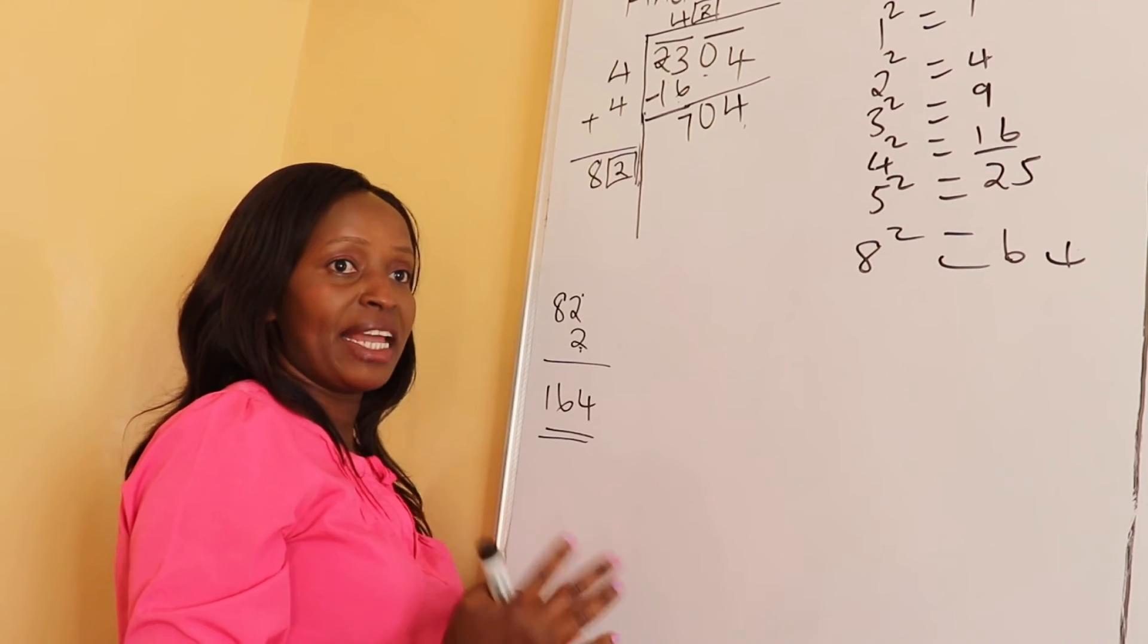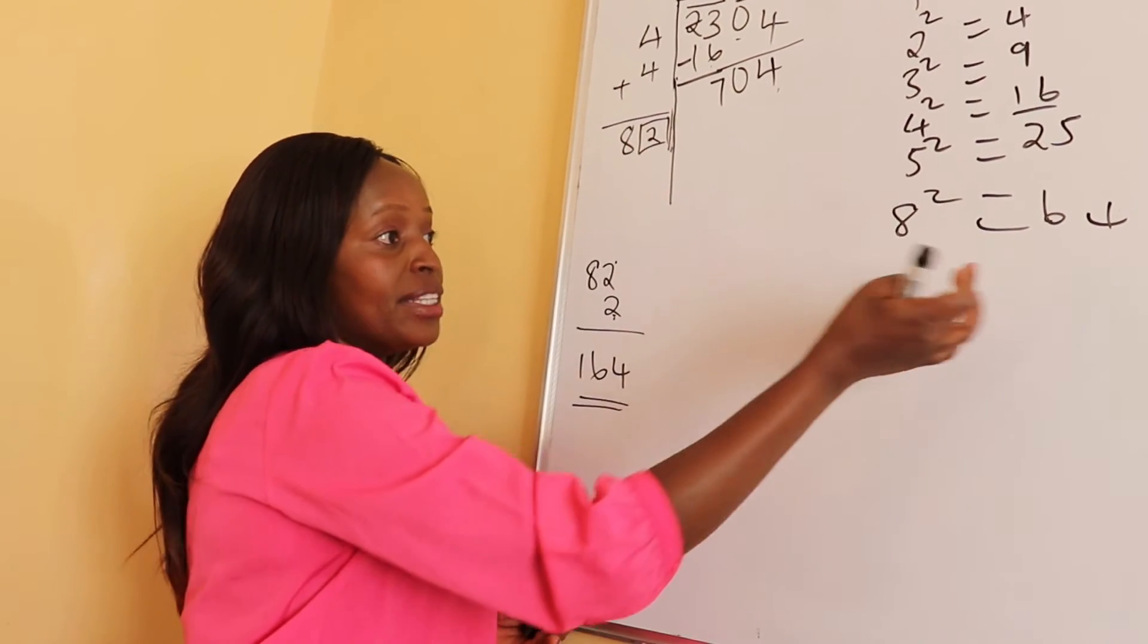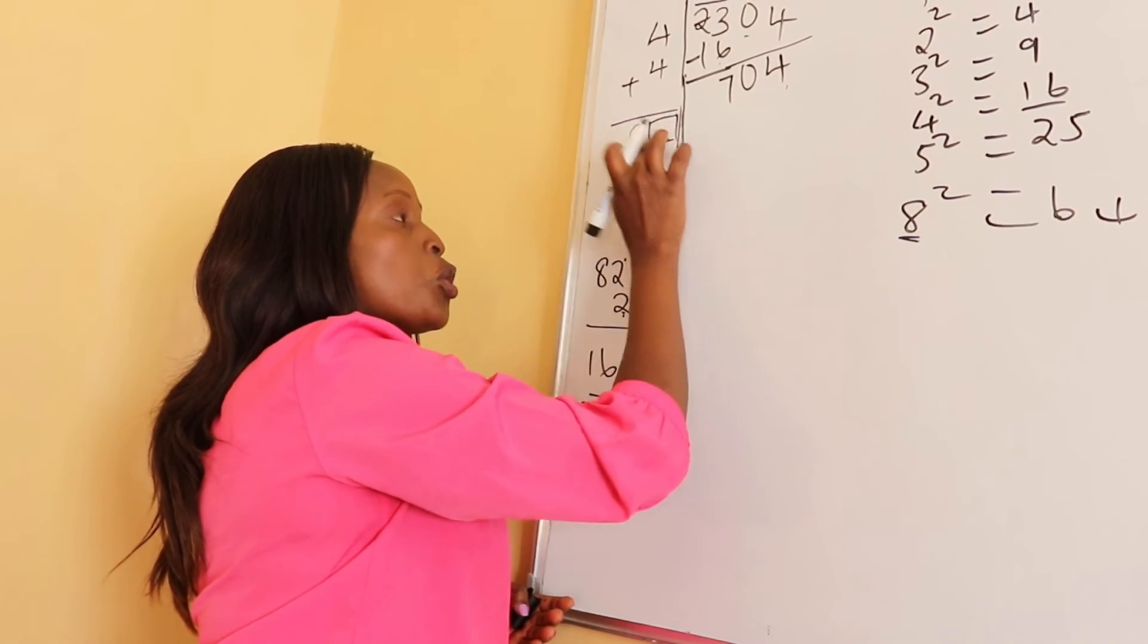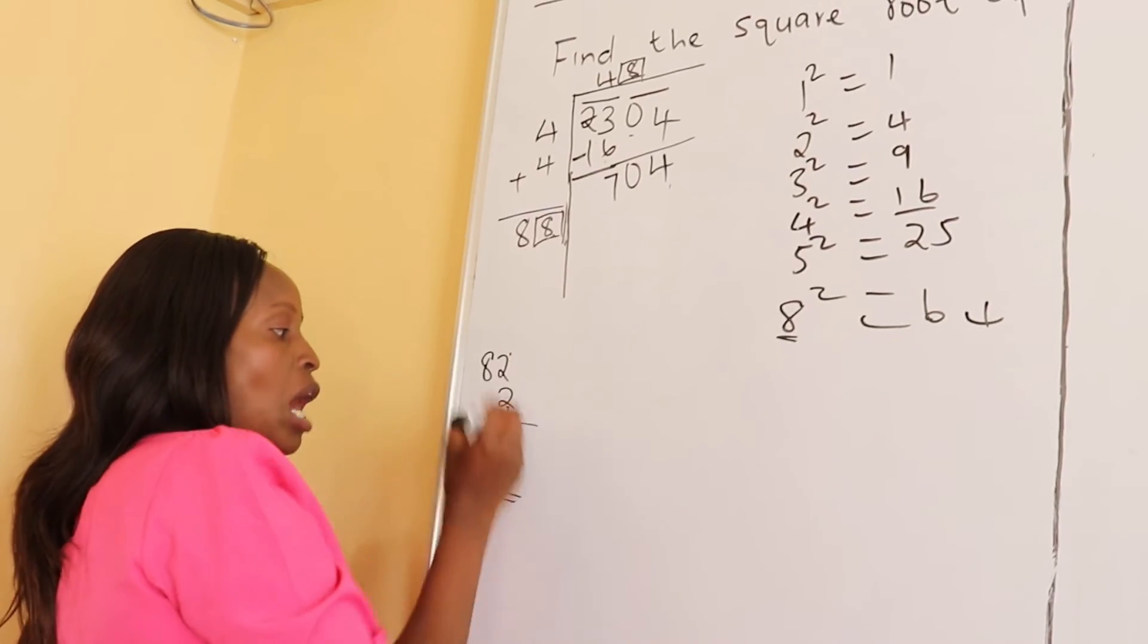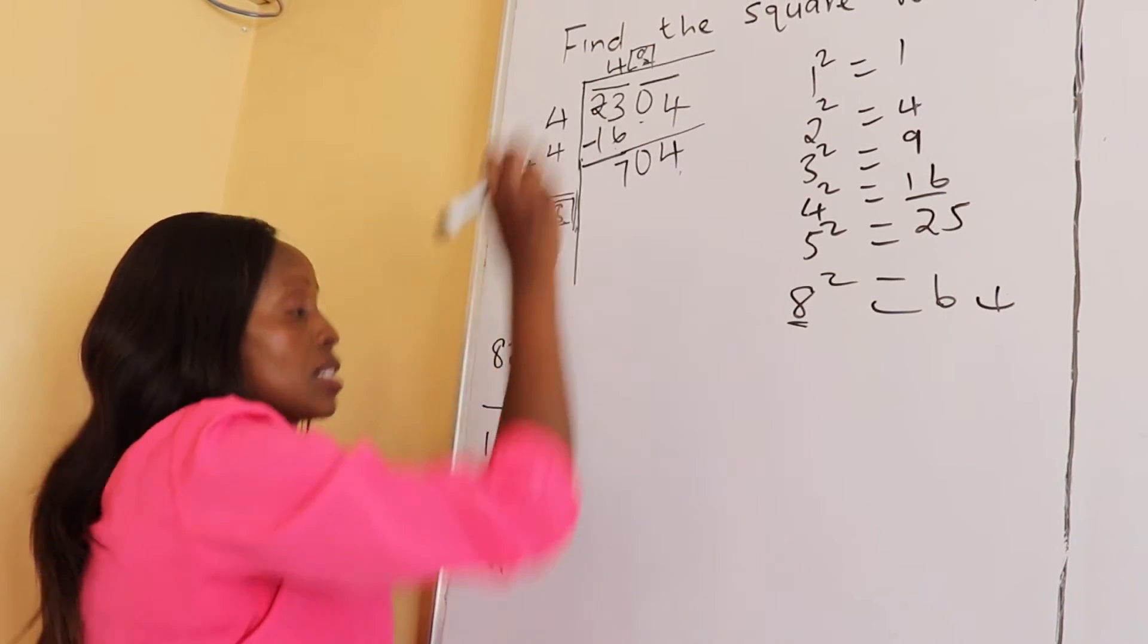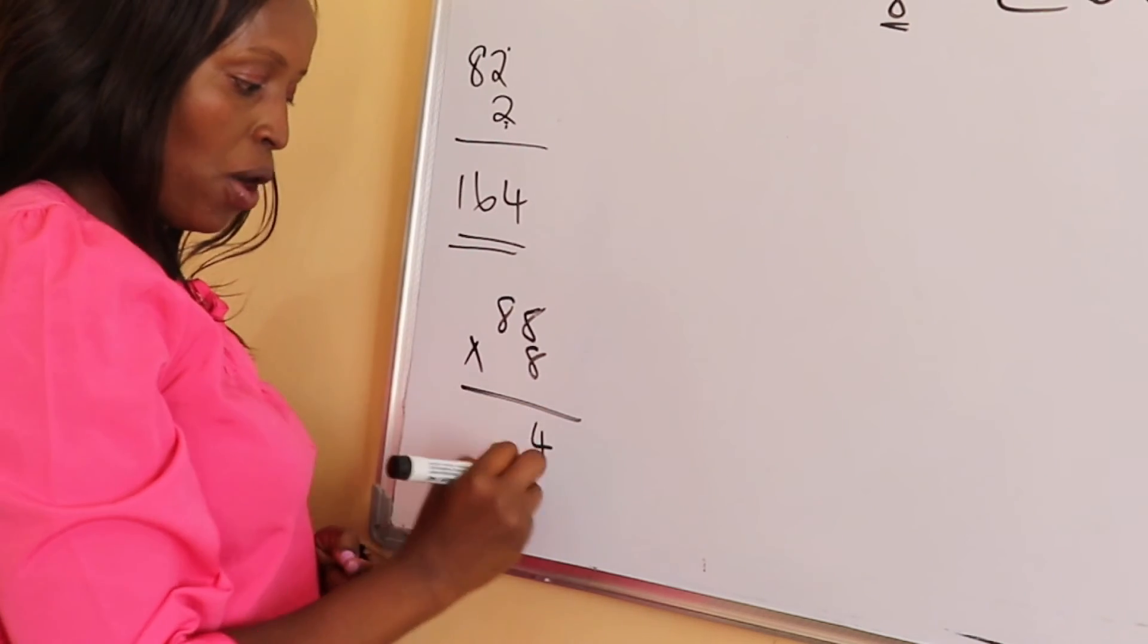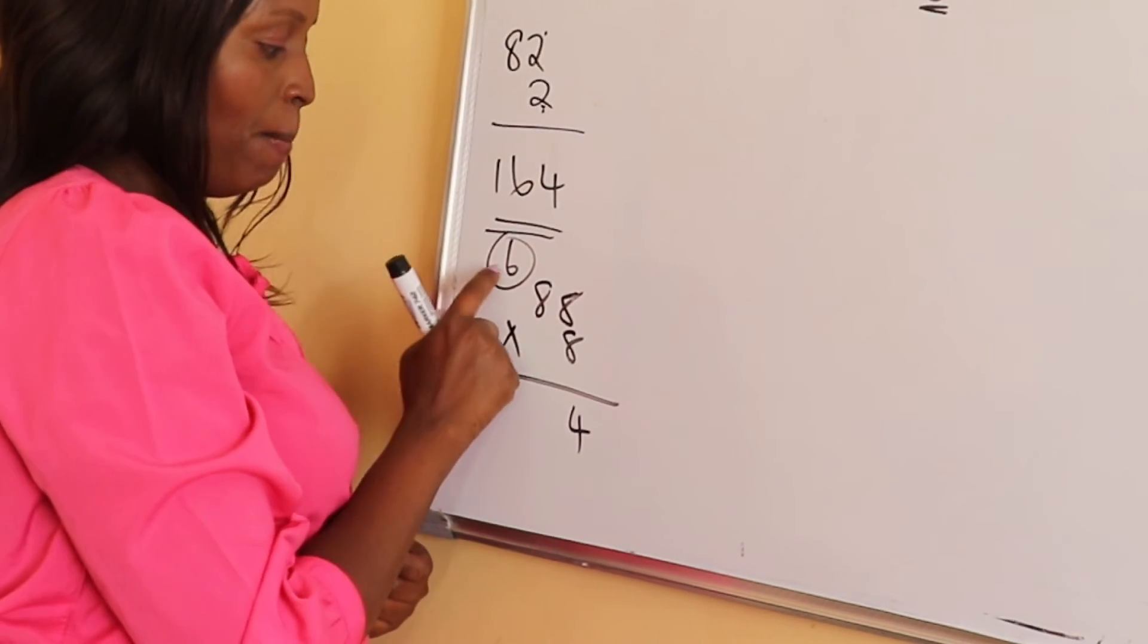We normally use trial and error method. Let's try the other number when we square it gives us a digit that ends with 4. So let's try 8. Now we remove 2, we put 8 here and also here we put 8. So our new number will be 88 times 8. 8 times 8 is 64, carry 6. 8 times 8 is 64 plus 6 is 70.